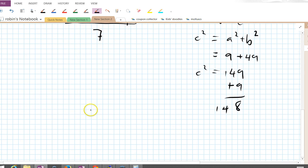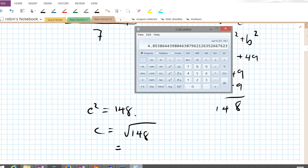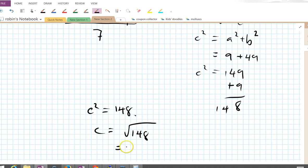So c squared equals 148. So c is the square root of 148, which is, calculate it, 148 square root. Oh, there it is. 12.165, or 12.16, call it. 12.17, I guess.